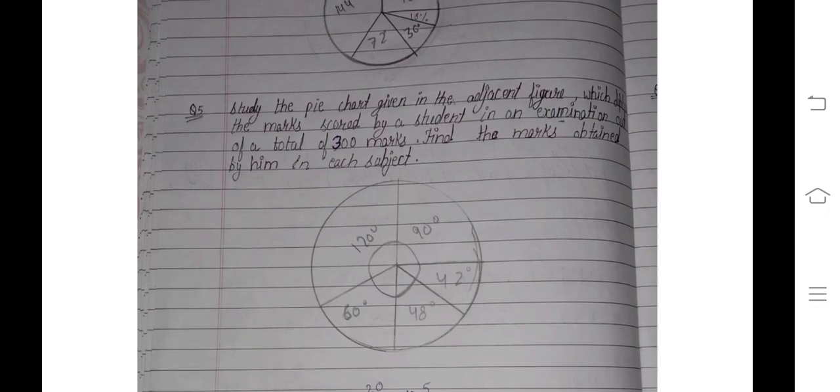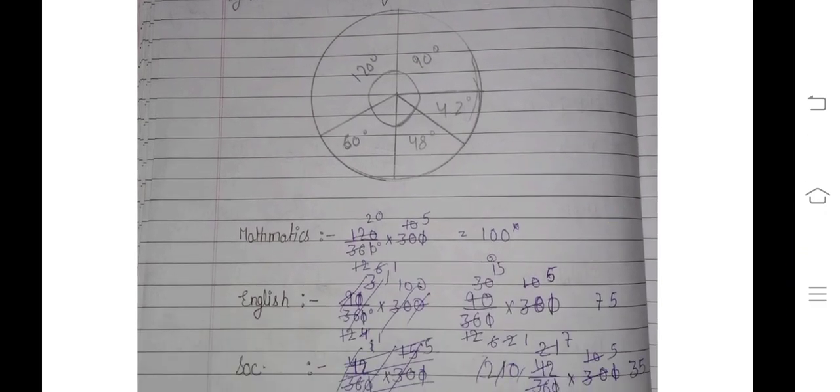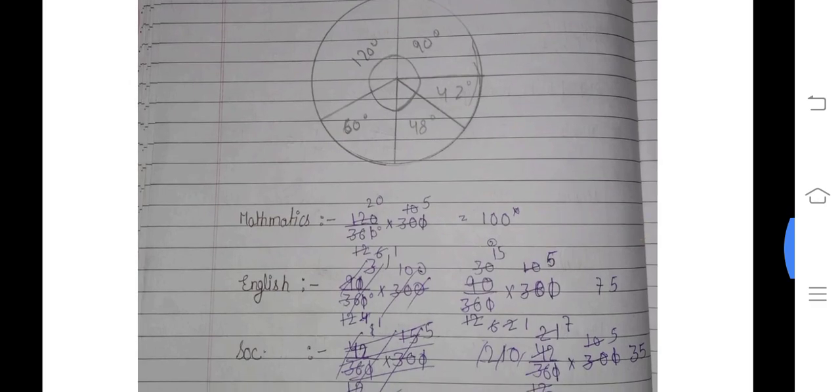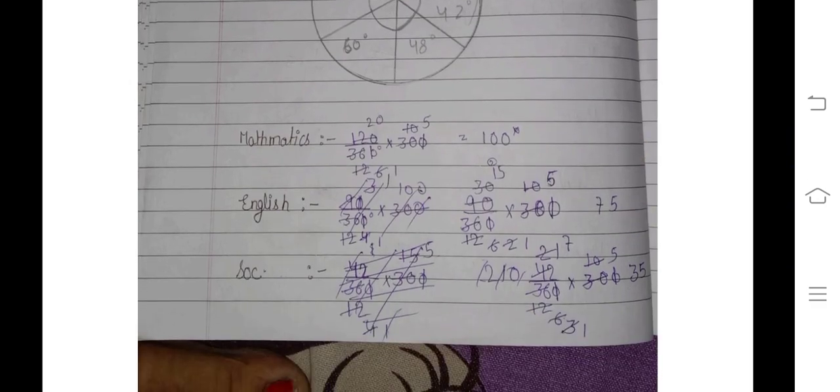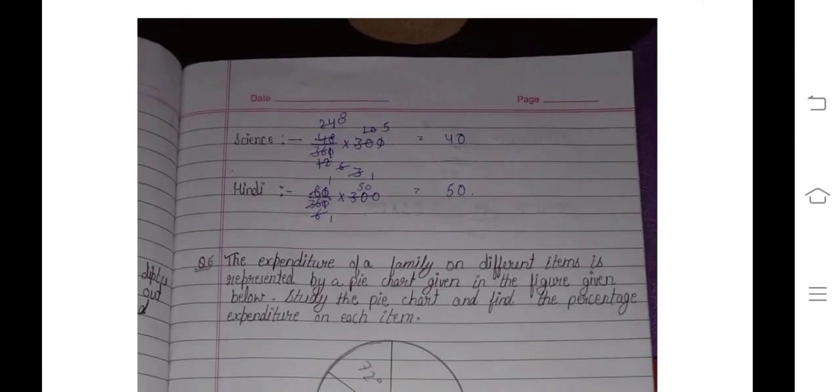Question number five: Study the pie chart given in the adjacent figure, which shows the different marks scored by a student in examination out of a total of 300 marks. Find the marks obtained by him in each subject. We have a pie chart. Mathematics has 120 degrees, so we take 120 upon 360 multiply by 300. We get 100 marks in mathematics. English gets 75 marks, Social Science 35, Science 50, and Hindi 50.